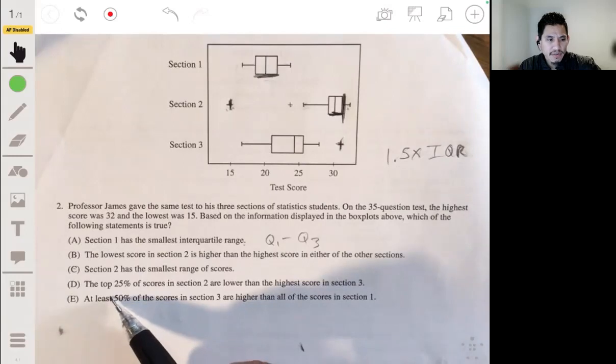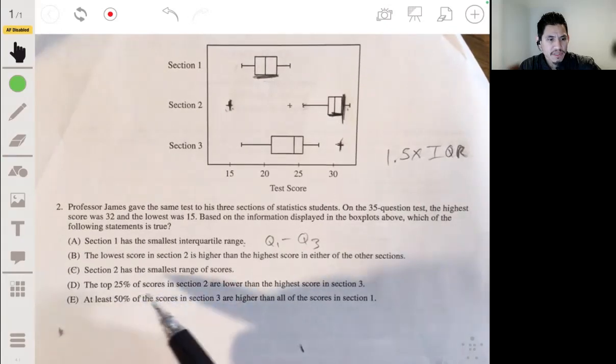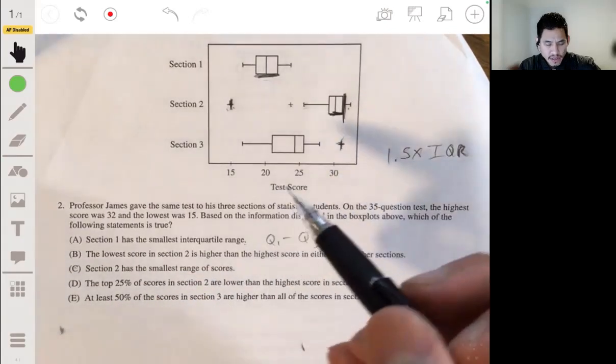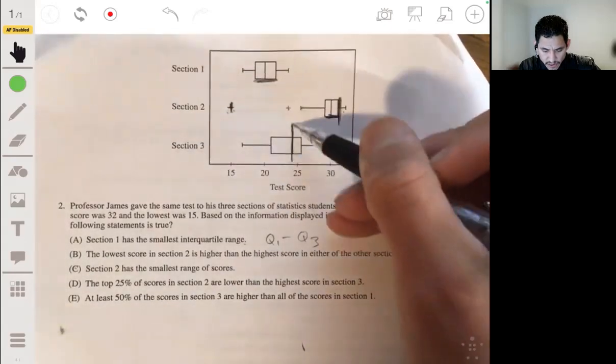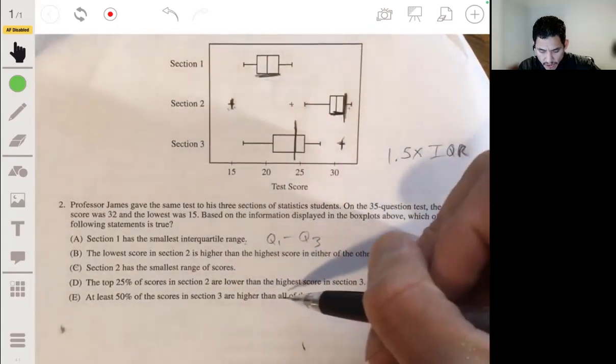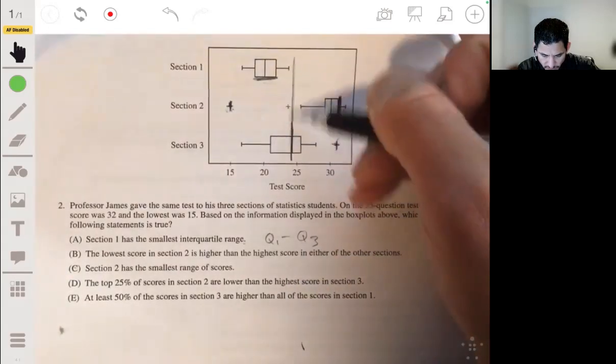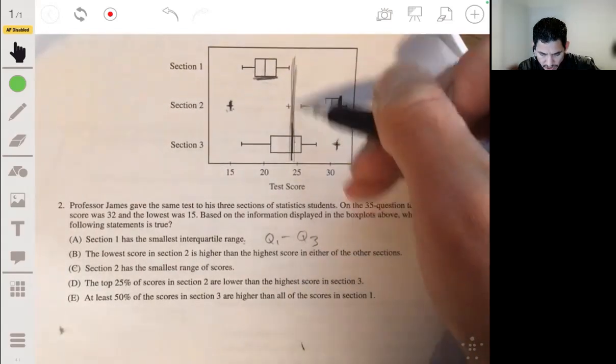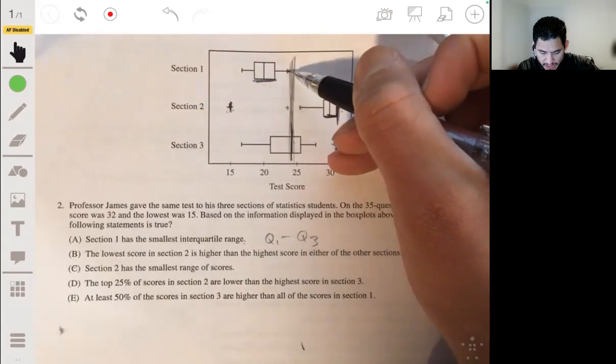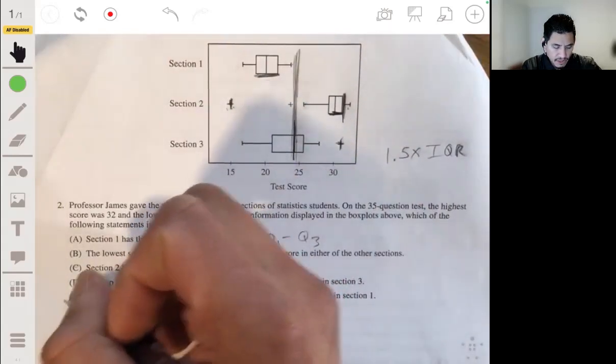And E, so it's going to be E, but let's just go over it. At least 50% of the scores in section three, so at least 50% of the scores starting here, are higher than all the scores in section one. Yeah, because if you look at the 50th percentile on section three, that indeed is higher than the max in section one. So the answer is E.